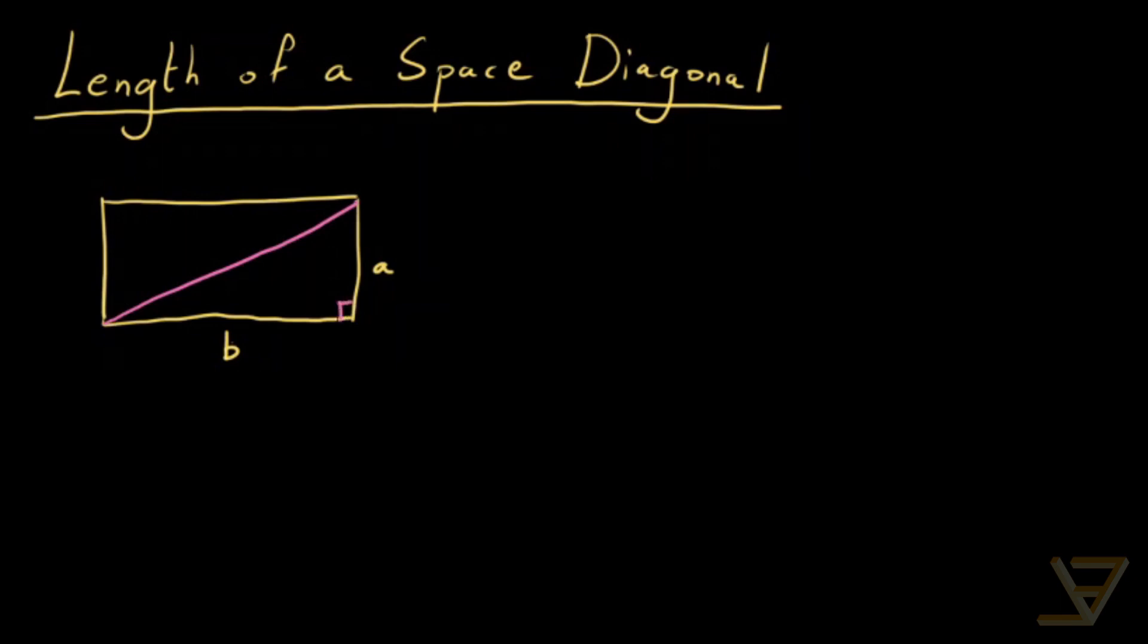Then because we have a 90 degree angle here, the Pythagorean theorem tells us that C over here is equal to the square root of A squared plus B squared.